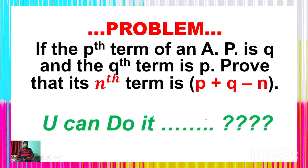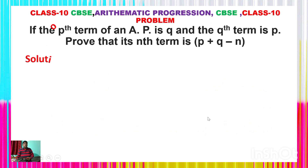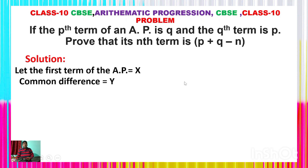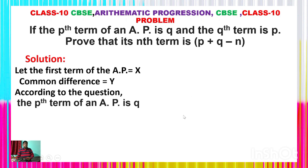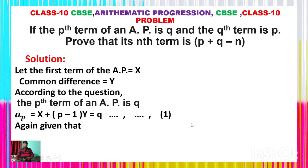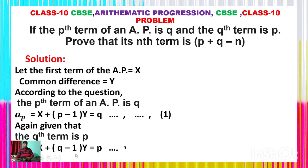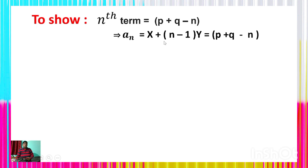Let us see the solution. Let the first term of the AP be x and the common difference be y. According to the question, the pth term is q: a_p = x + (p−1)y = q. And the qth term is p: a_q = x + (q−1)y = p. We have to prove the nth term is p + q − n: a_n = x + (n−1)y = p + q − n.